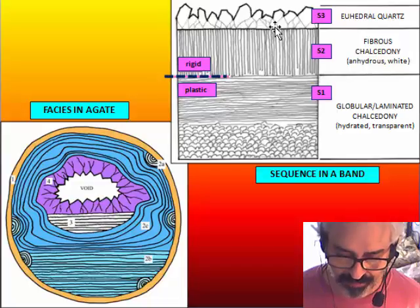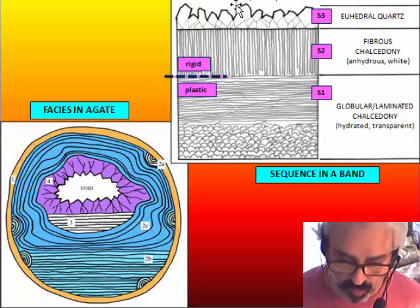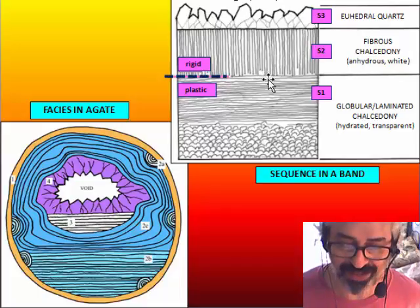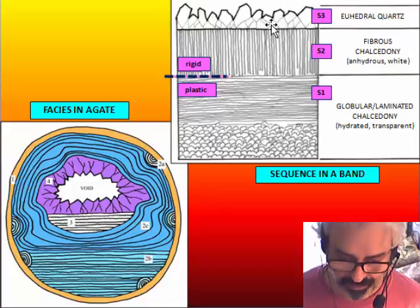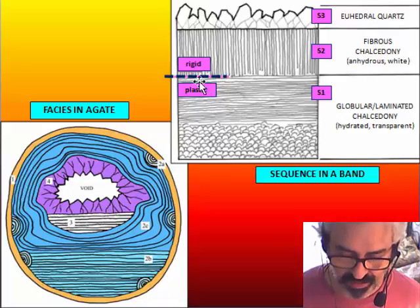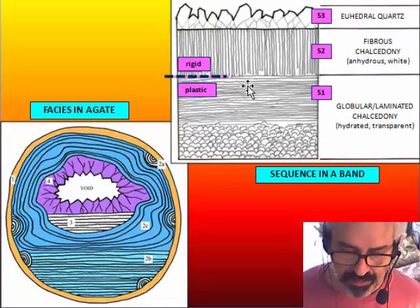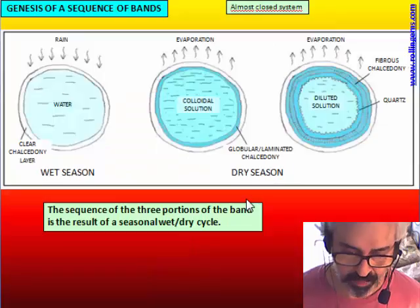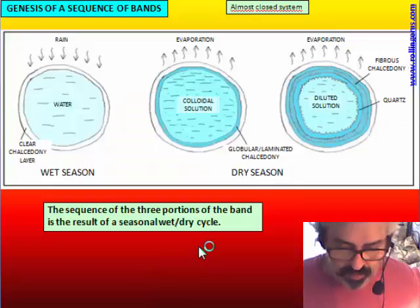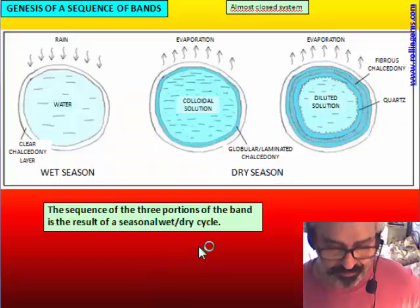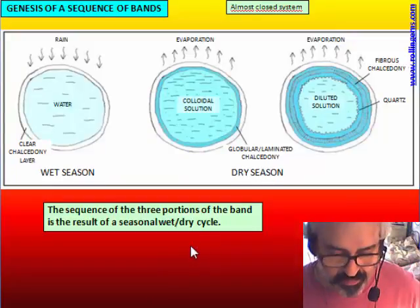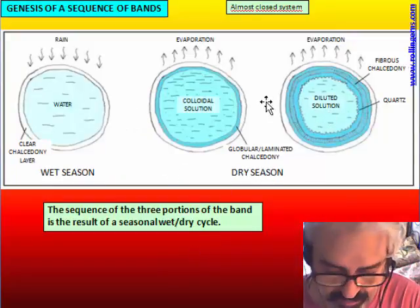Both fibrous chalcedony and quartz are stuck to the wall of the cavity because they are crystalline. So globular chalcedony is the only component that can be plastic — in gel form — while both fibrous chalcedony and quartz are rigid and crystalline.